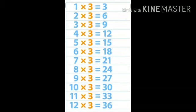Six threes are eighteen. Seven threes are twenty-one. Eight threes are twenty-four. Nine threes are twenty-seven. Ten threes are thirty. Eleven threes are thirty-three. Twelve threes are thirty-six.